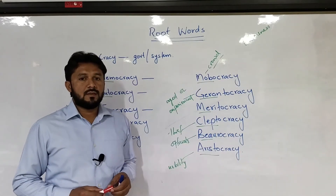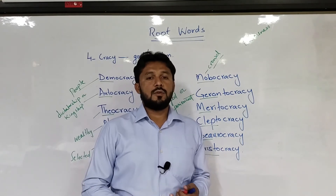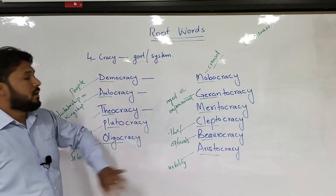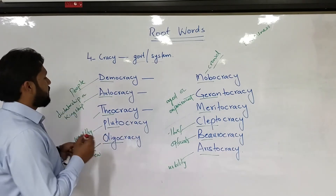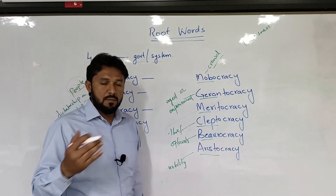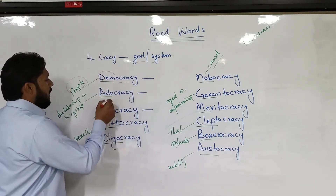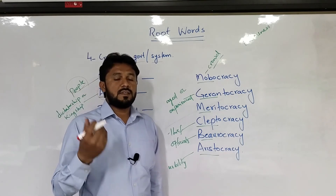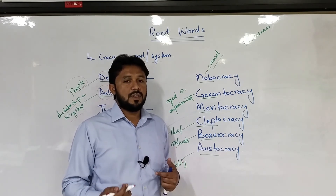The fourth root word is '-cracy,' which means government or system. There are many words where you will find '-cracy': democracy, autocracy, plutocracy, and others. These are different types of governments. 'Democracy' — 'demo' means public or people, so democracy means government by the people, or government for the people, run by people. 'Autocracy' — 'auto' means dictatorship or kingship, so autocracy means government run by one dictator or one king.